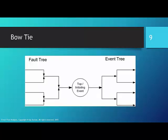Fault trees and event trees make up the two sides of a bow tie diagram, as shown here. The fault tree describes the series of events that can cause a hazard to occur. The event tree shows how it is mitigated if it does occur.